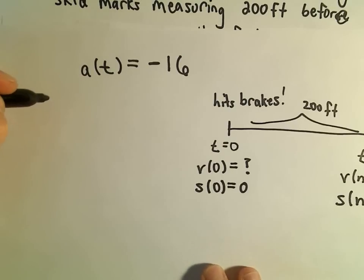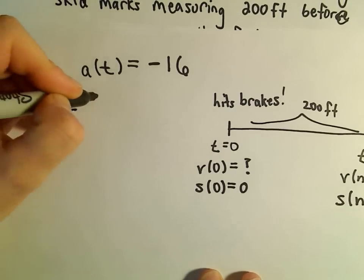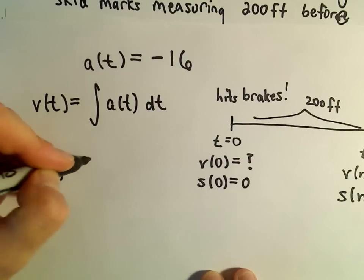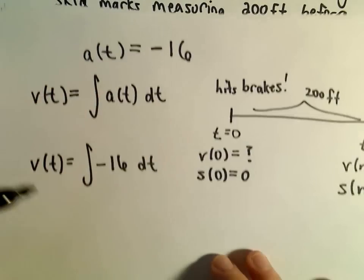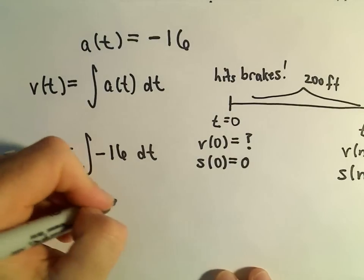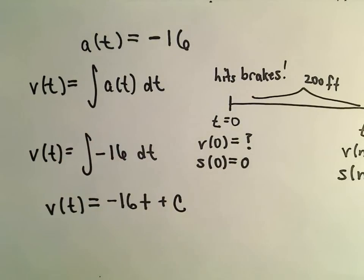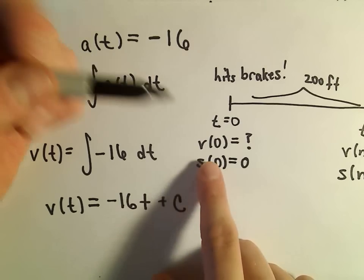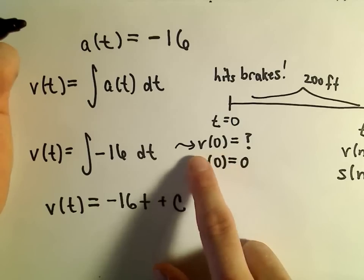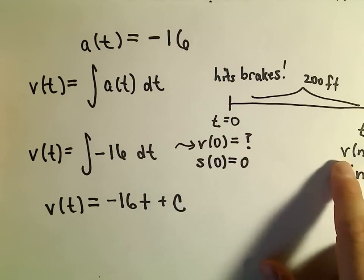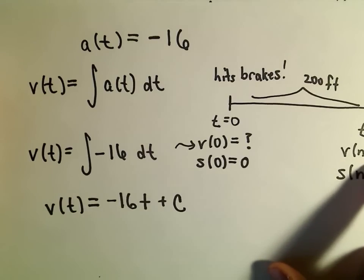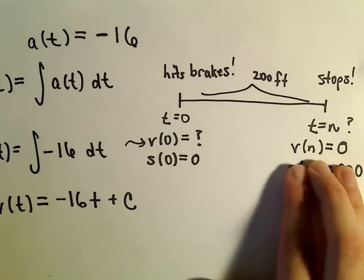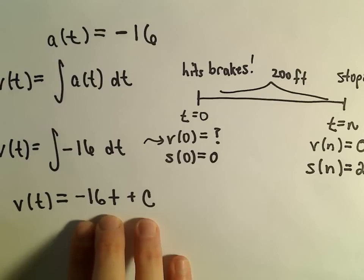The acceleration is negative 16, so to get back to velocity, our velocity function is going to be the anti-derivative of the acceleration function. The velocity v of t will simply be the anti-derivative of negative 16, so that means the velocity at time t equals negative 16t plus c. A lot of times we use initial conditions to figure out these constants, but here I know that after zero seconds I've got some initial velocity — that's what we're trying to figure out — and after n seconds the velocity equals zero. I don't see how plugging in v(n)=0 helps me figure out the constant c just yet.